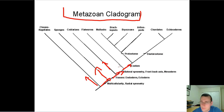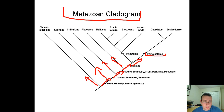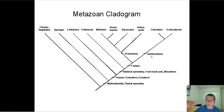If you have a true body cavity inside your mesoderm, you're going to be called a coelomate; if not, you're in the worms group. Along the coelomates, you either have deuterostomes — which are the ones that developed the anus first out of the blastopore — or the ones that developed the mouth first, which are the protostomes. These are different branches. We'll learn about these branches later in the year as we go through each group of animals and revisit this cladogram in more detail.